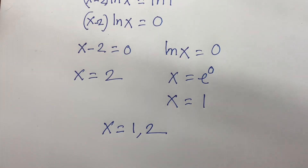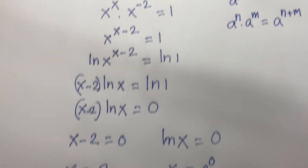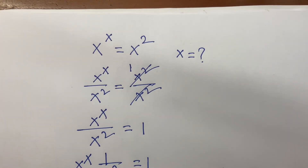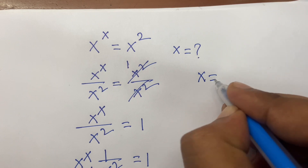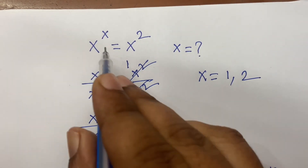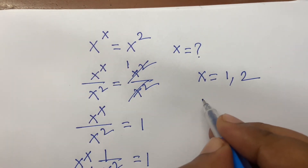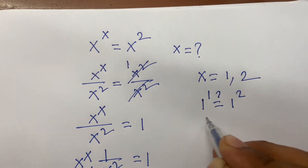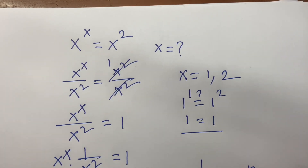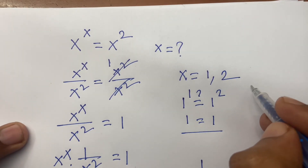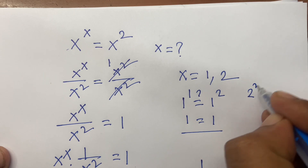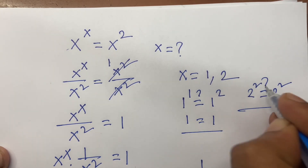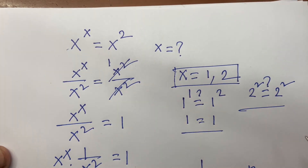To justify: our original equation is x to the power x equal to x squared, and we found x equal to 1 and x equal to 2. If I put x equal to 1: 1 to the power 1 equal to 1 to the power 2, so 1 equal to 1. If I put x equal to 2: 2 to the power 2 equal to 2 to the power 2. So x equal to 1 and x equal to 2 are the correct answers.